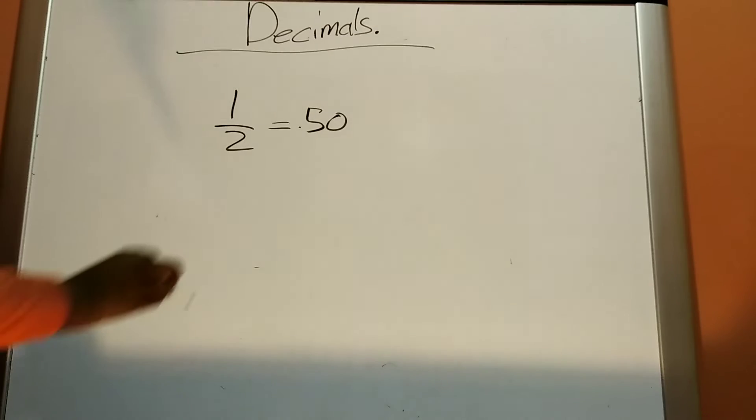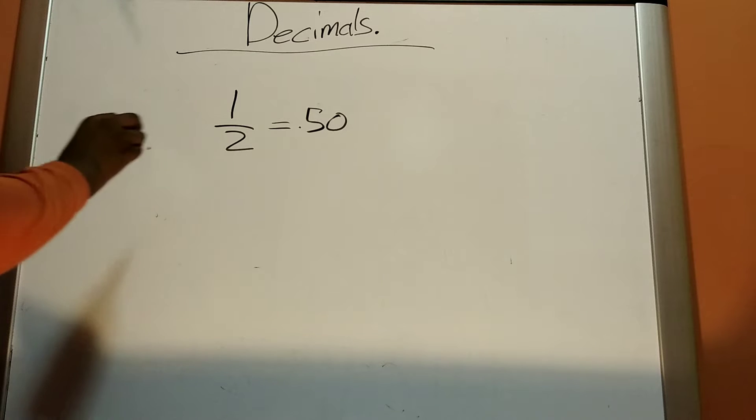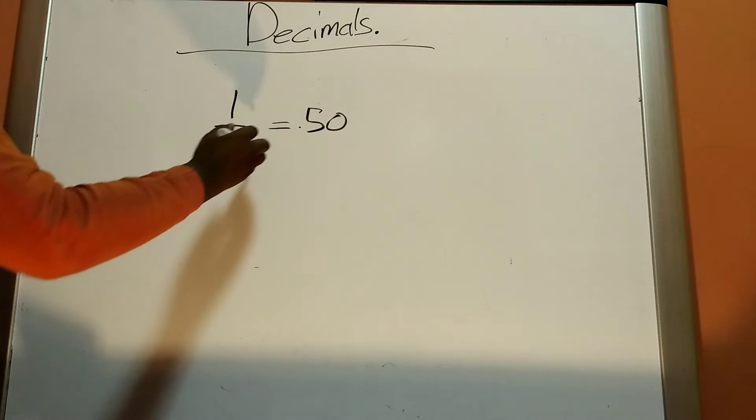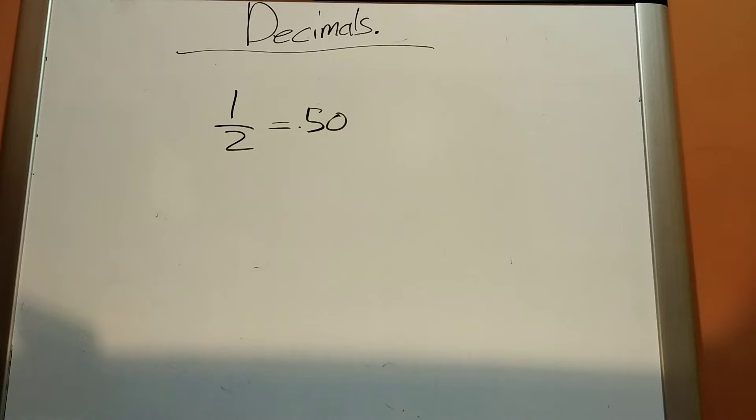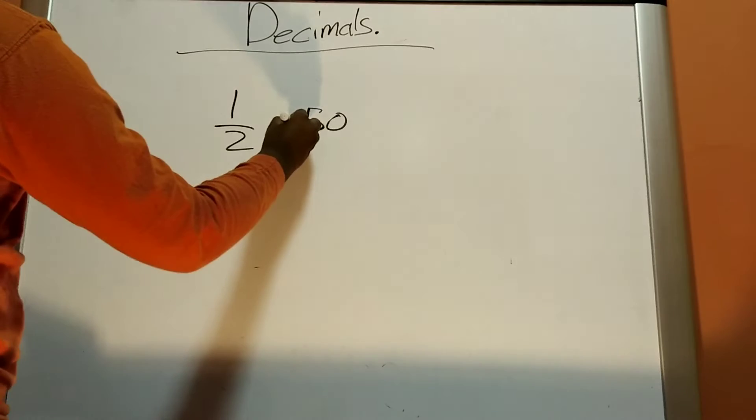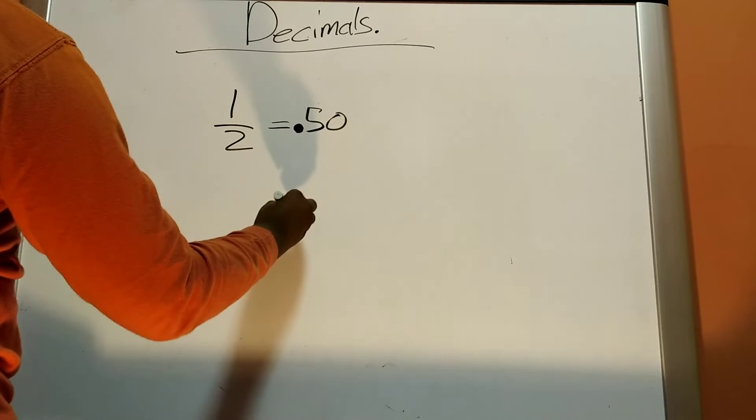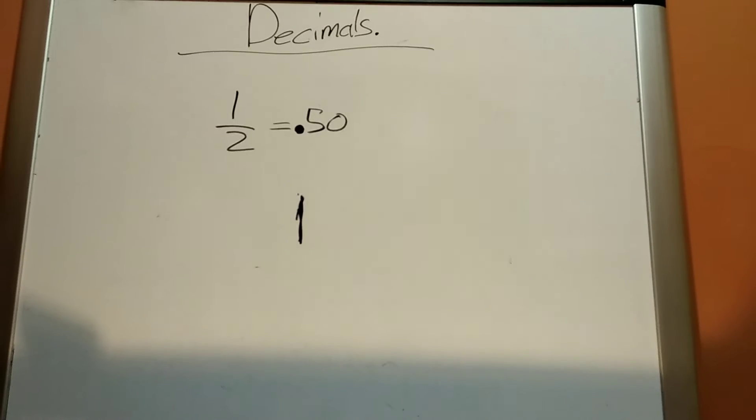A fraction and a decimal is kind of the same. It's really just showing you an amount of a number. So if you had one half, it would be equivalent to 50 hundredths. This is showing a half of one number. One number, this number 1, is right now bigger than that 50 hundredths.